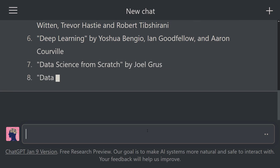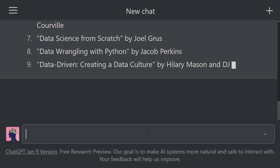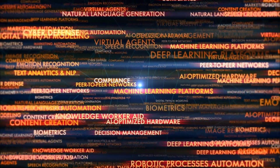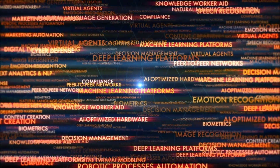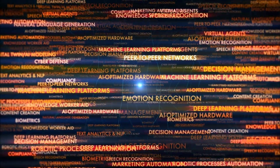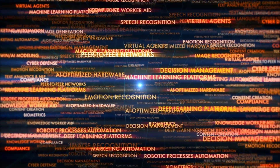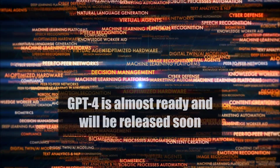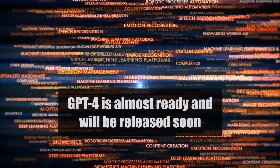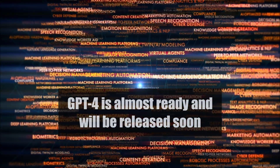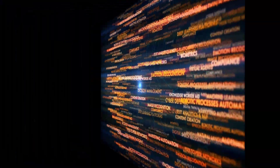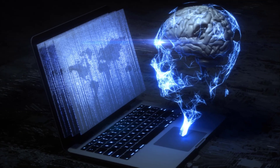ChatGPT was fine-tuned on top of GPT-3.5 using supervised learning and reinforcement learning. That covers a brief overview of the recent AI models created. The last member of the GPT family has not yet been released. GPT-4 is almost ready and will be released soon, and everyone is wondering what it can do. Let's take a brief look at what GPT is.